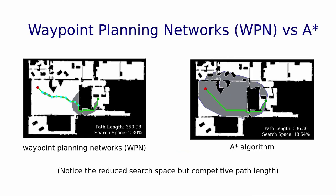Here, WPN is compared with A-star on a real-world map. Notice the reduced search space of WPN and competitive path length.